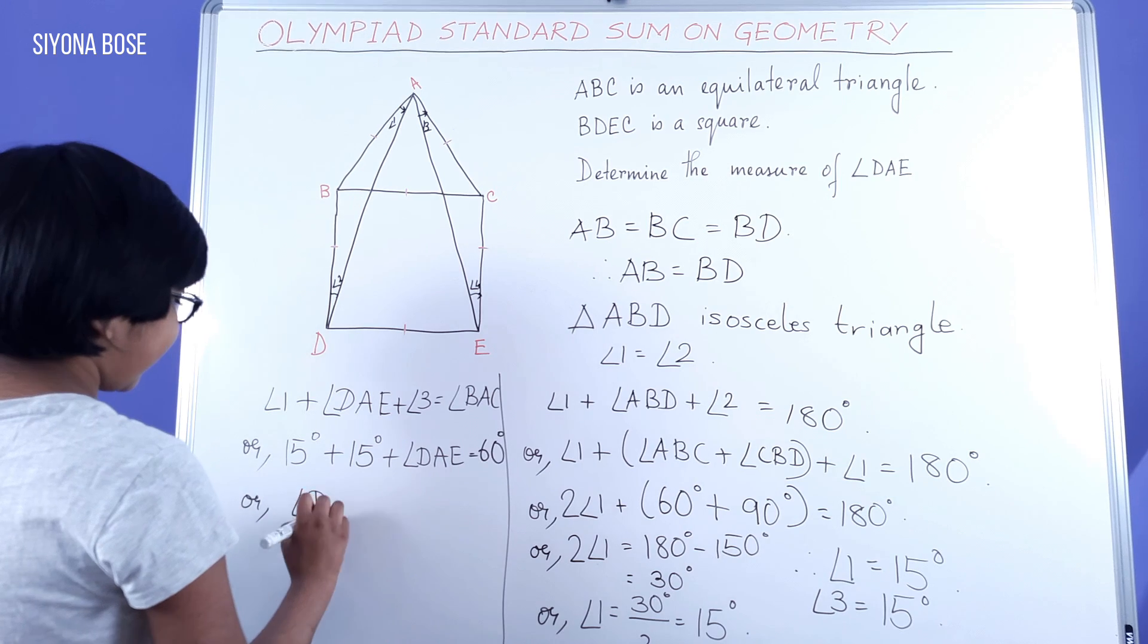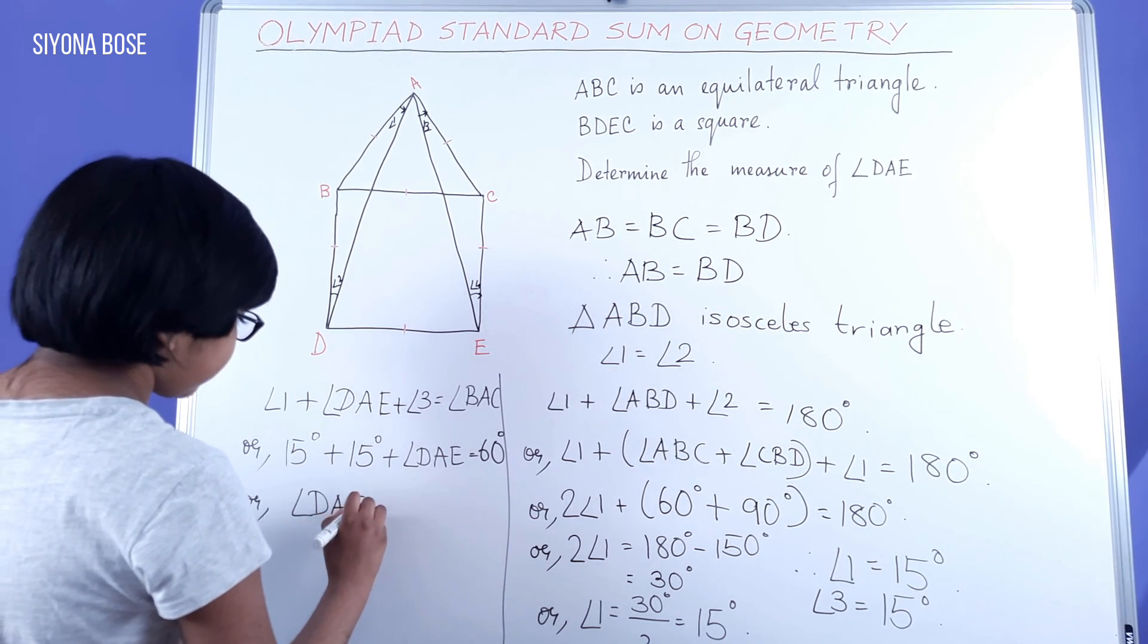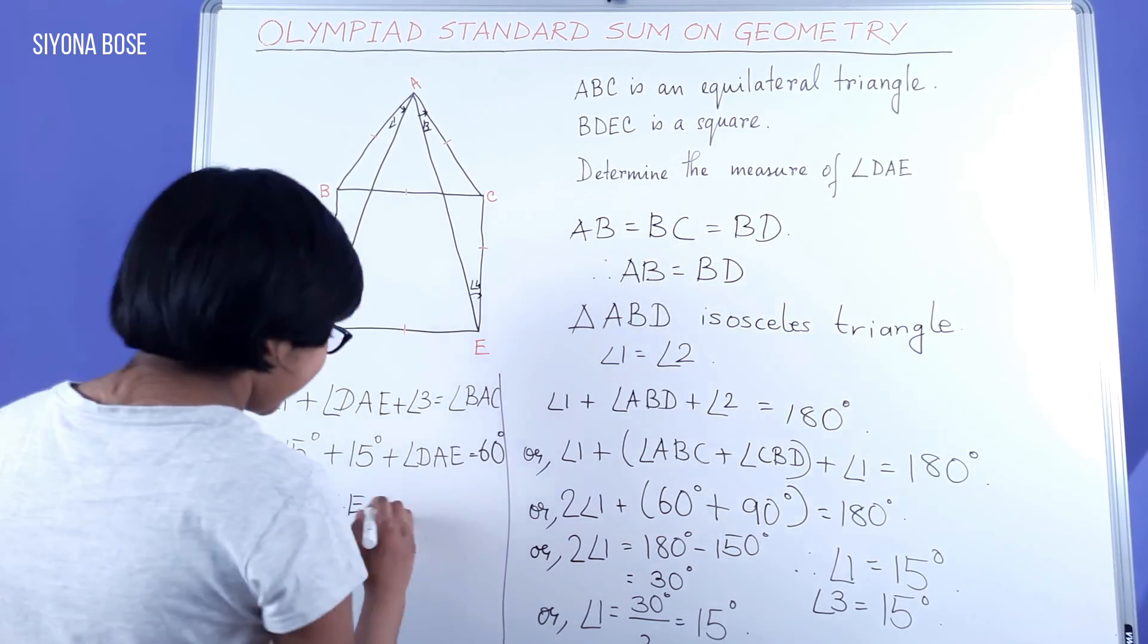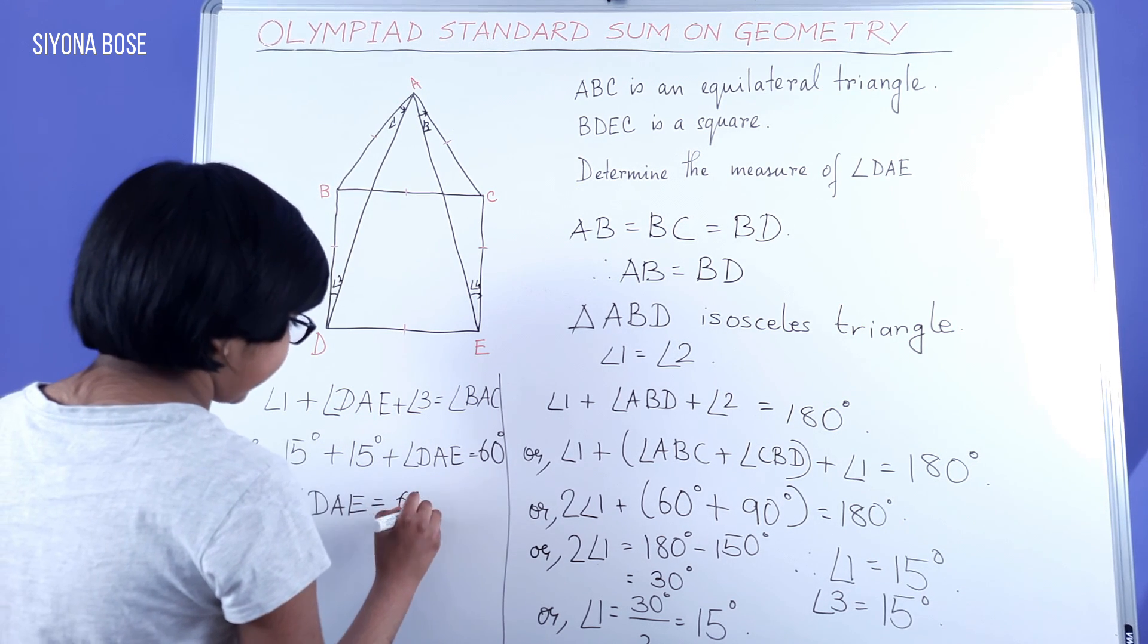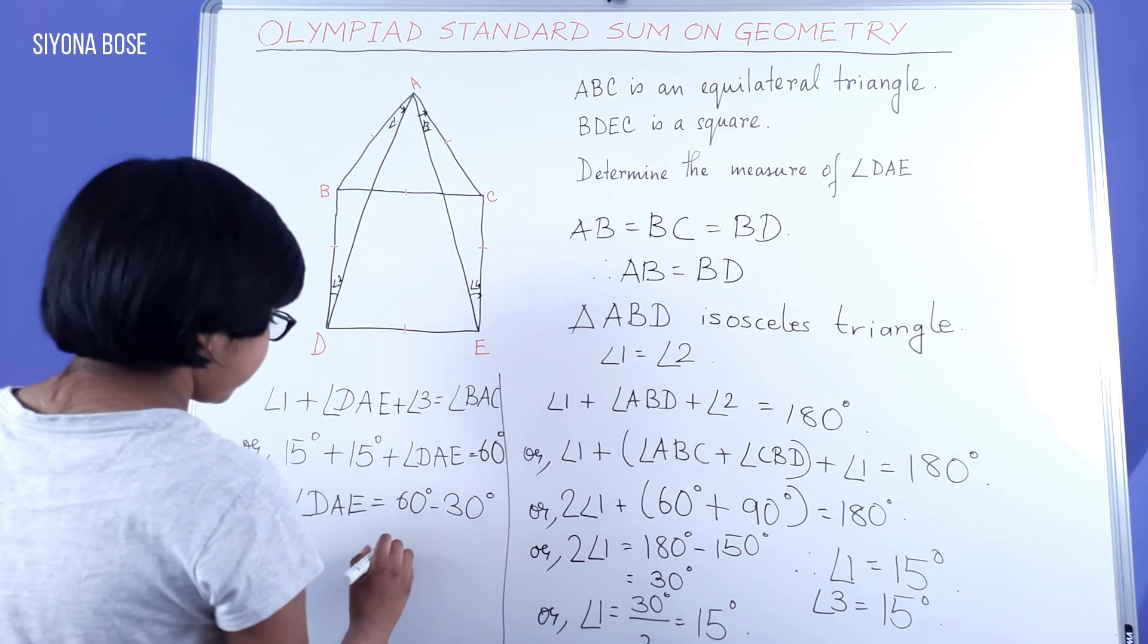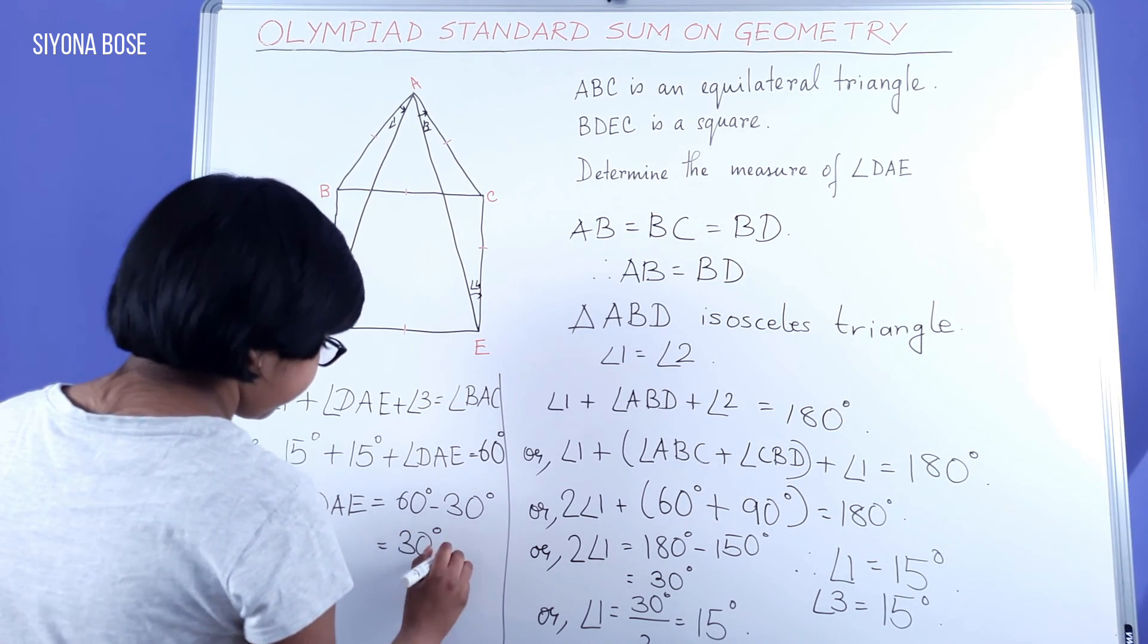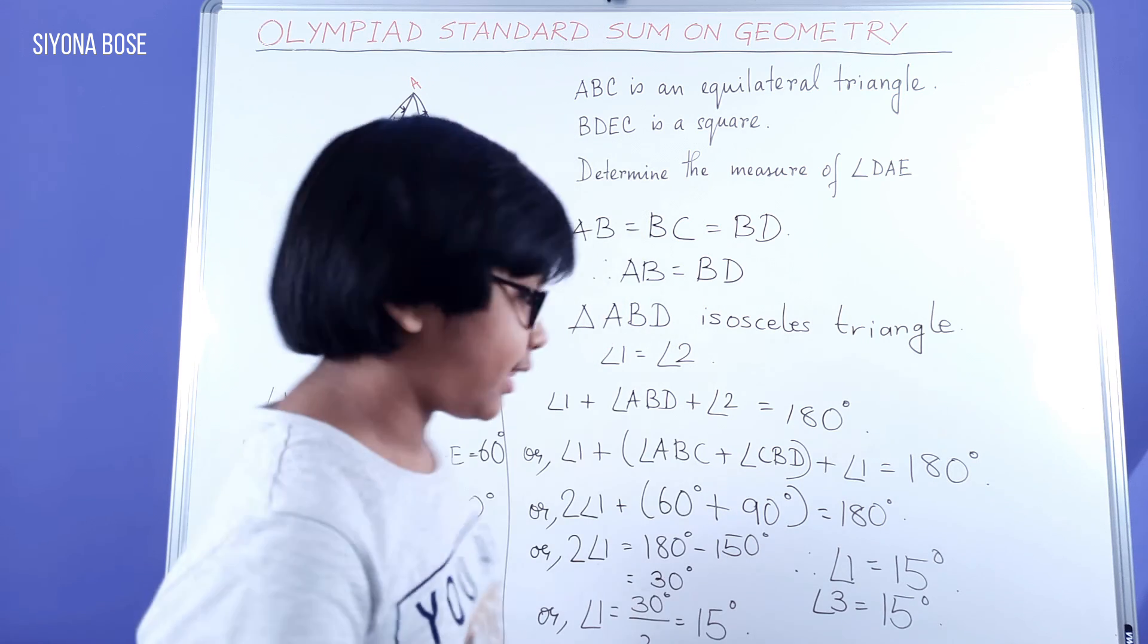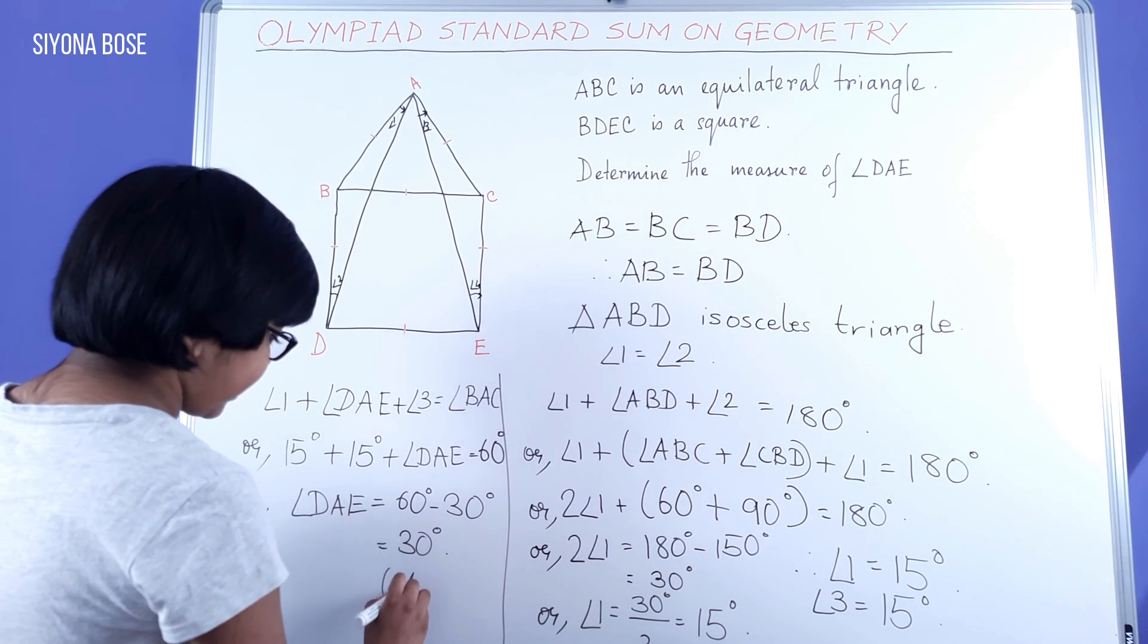Or, angle DAE equal to 30 degrees. So, we do a transposition: 60 degrees minus 30 degrees equal to 30 degrees. So, DAE is 30 degrees. And this is our final answer.